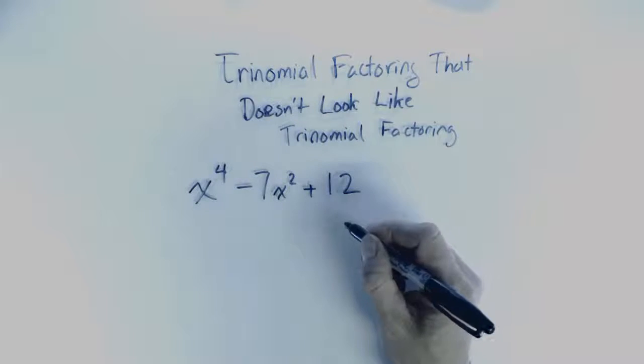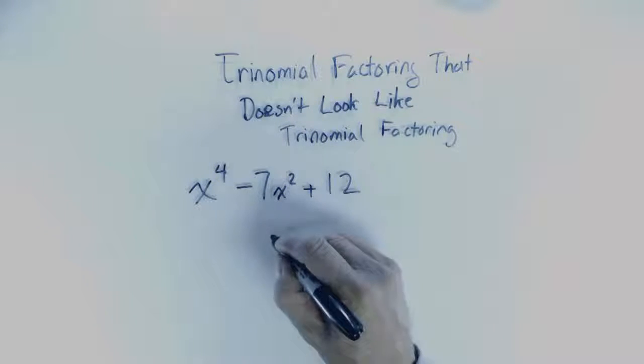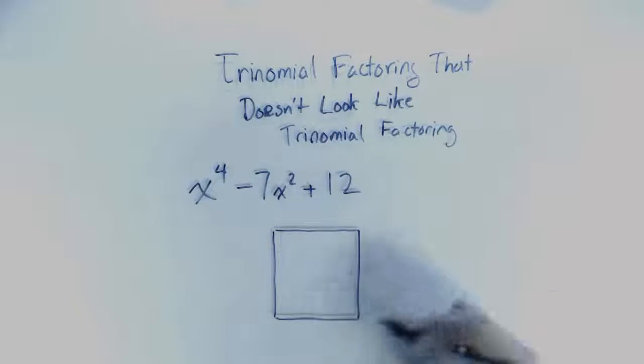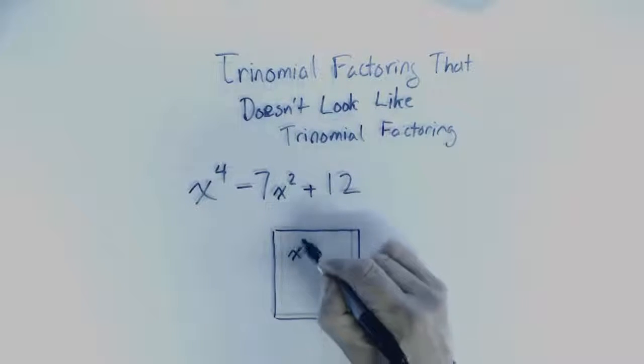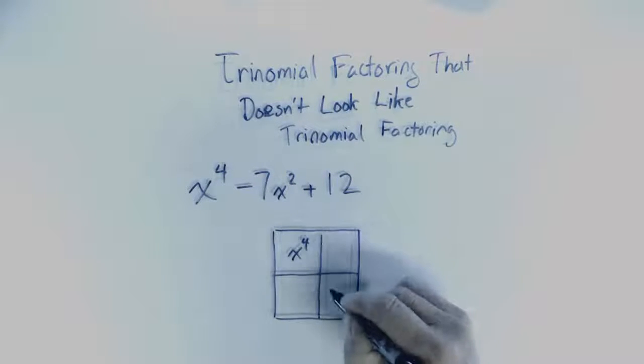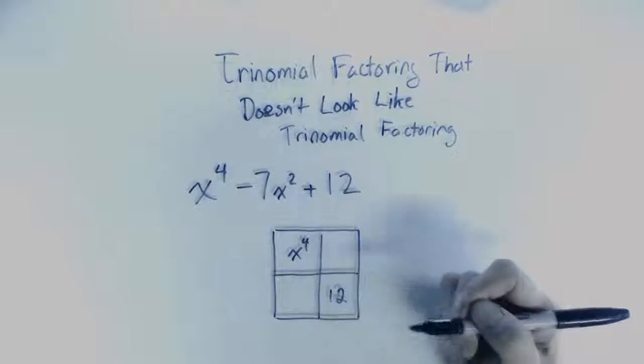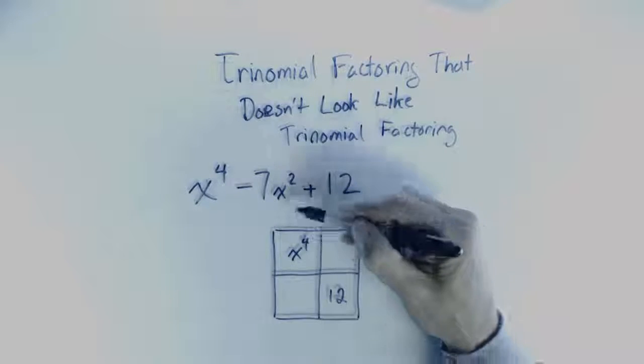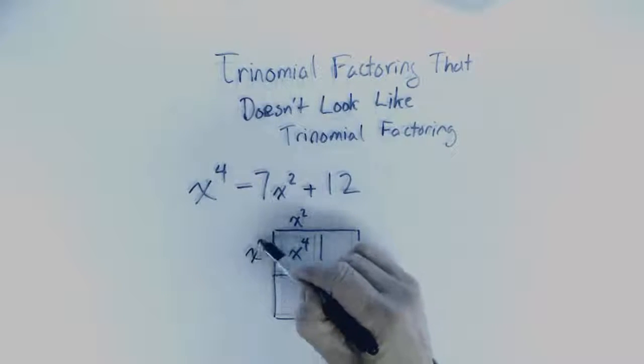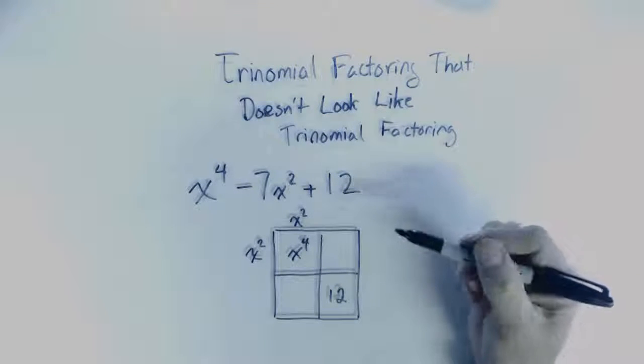So if we wanted to factor this using the box, make sure that it's going to decompose the way we want. x to the fourth goes in there, 12 goes in there, and so this might be an x squared and that might be an x squared, in all likelihood it is.